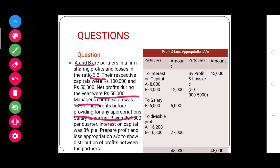Salary to partner B is appropriation of profits, recorded on the debit side of the profit and loss appropriation account. Similarly, interest on capital is also appropriation of profits, recorded on the debit side of the profit and loss appropriation account.